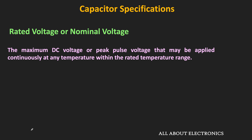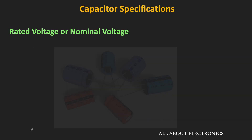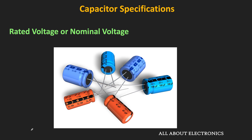The next specification is the rated voltage or the nominal voltage of the capacitor. This rated voltage is the maximum DC voltage or peak pulse voltage that may be applied to the capacitor continuously. Typically, this rated voltage is also mentioned on the capacitor itself. Depending on the application and the type of capacitor, this rated voltage may vary from tens of volts to tens of kV. If the applied voltage exceeds the rated voltage, the capacitor may get damaged.